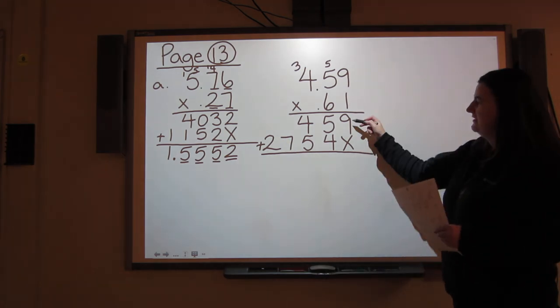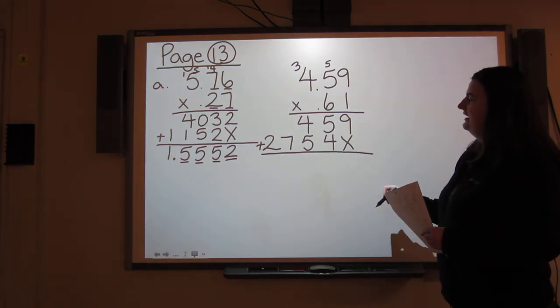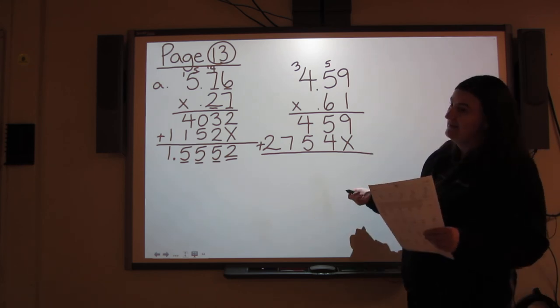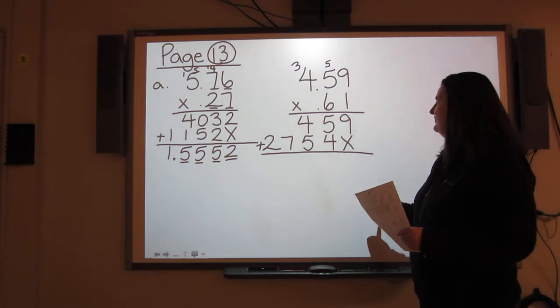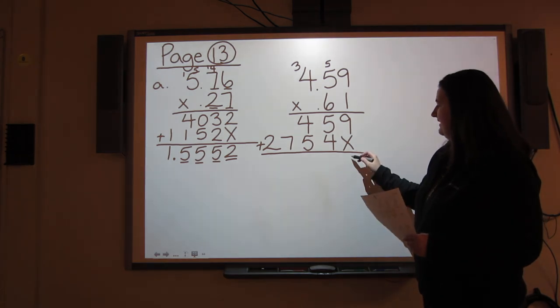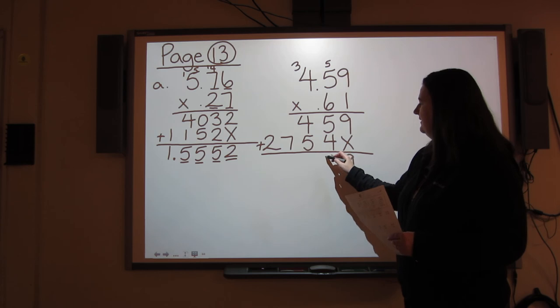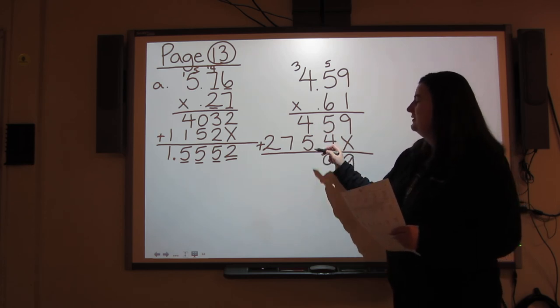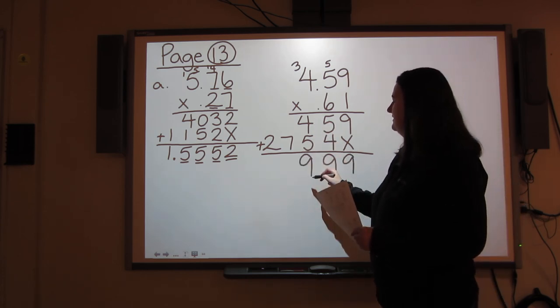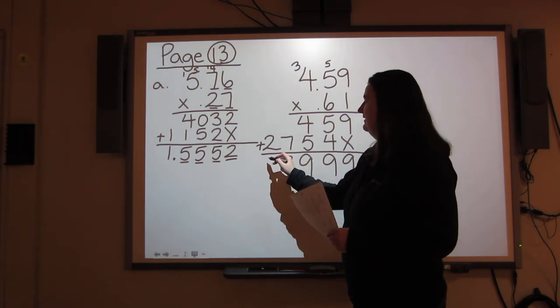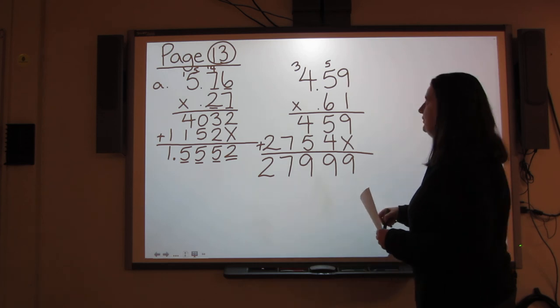I'm going to add up my 2 lines of answers, and then I'll have my final answer. Then I can put in my decimal. 9 plus nothing is 9. 5 plus 4 is 9. 4 plus 5 is 9. 7 plus nothing is 7. And 2 plus nothing is 2.